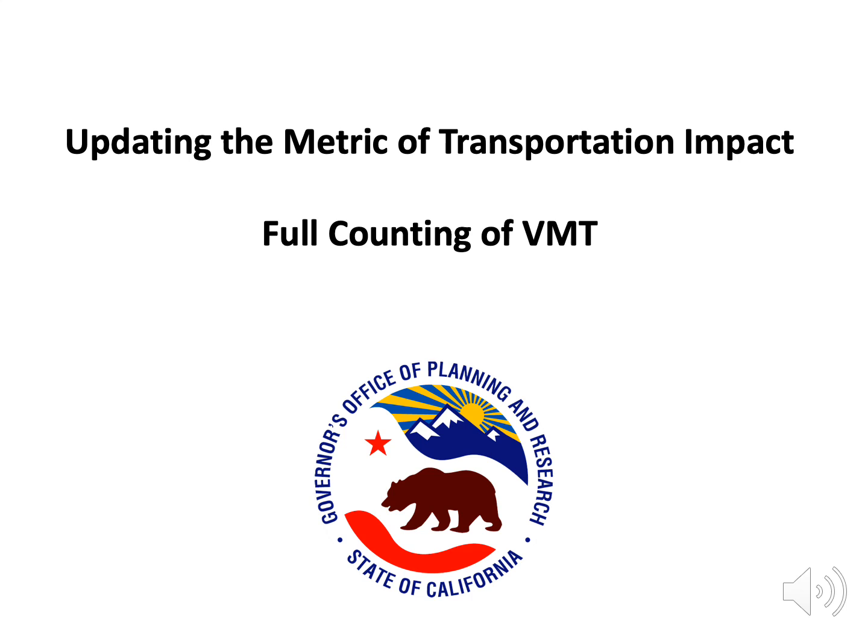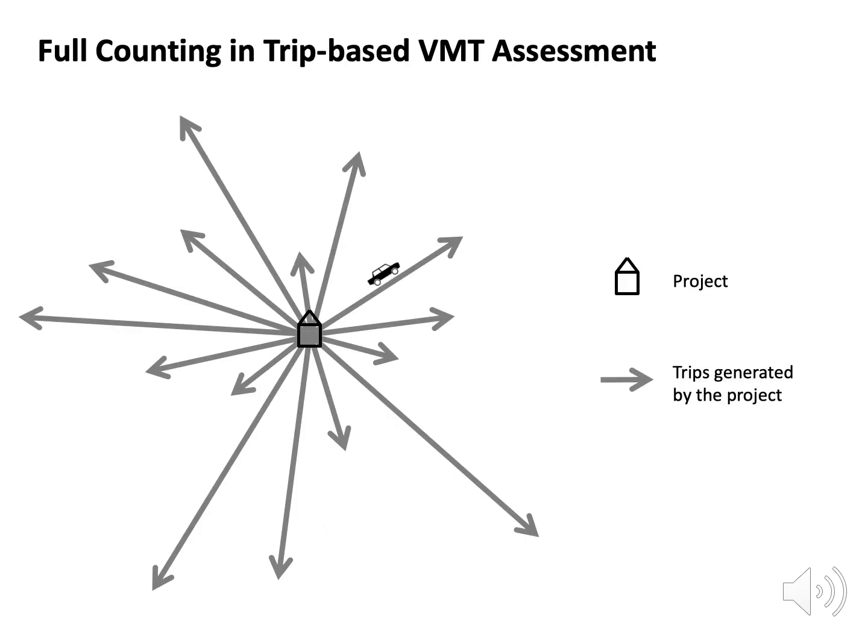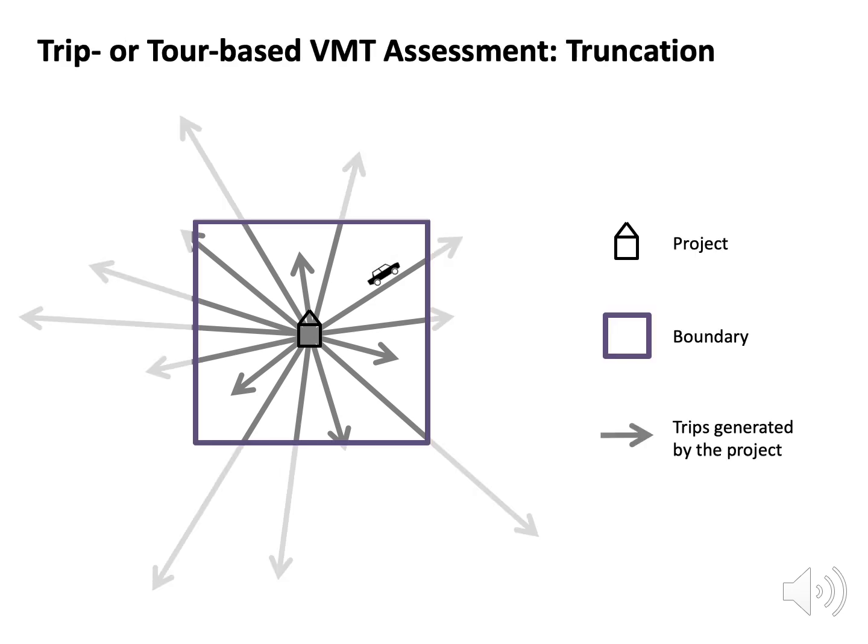Updating the metric of transportation impact: full counting of VMT. When assessing trip-based VMT under CEQA, include the full trip even if it goes beyond a jurisdictional boundary. Some modeling and inventory practices have truncated trips, for example, at a jurisdictional or regional boundary.